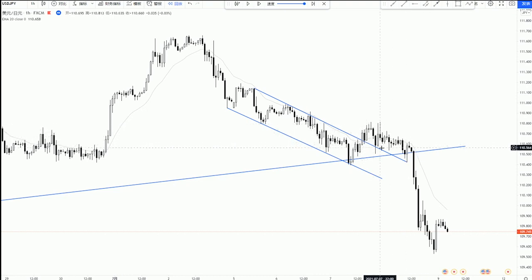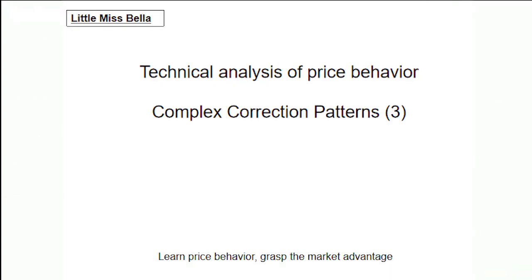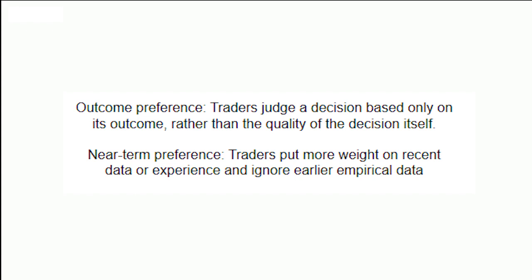Most traders have two cognitive biases: outcome preference and near-term preference. Outcome preference refers to the fact that traders judge a decision based only on its outcome rather than the quality of the decision itself. Recent preference refers to attaching more importance to recent data or experience while ignoring earlier empirical data. A lot of novice traders see an analyst who has been right five or six, seven or eight times in a row recently, and make a gut-feeling judgment that the analyst is very strong and reliable — without thinking about the logic behind those calls or looking at the analyst's previous data. Most participants who judge by gut based on recent results will leave the market with big losses or even blow out their accounts.